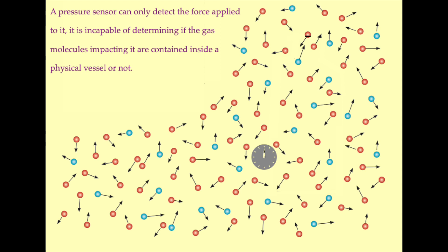The sensor itself has no idea if it is inside a vessel or outside of a vessel. It cannot determine its location. All that gas pressure sensors can detect is the force of gas molecules impacting against the detection surface. Nothing else is relevant.